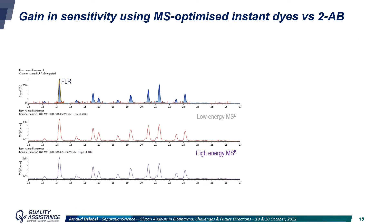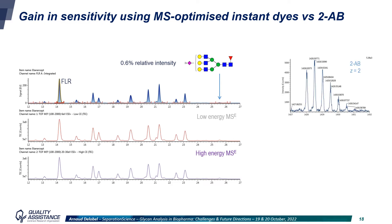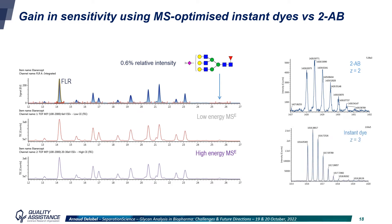The advantage of using instant dyes is the MS sensitivity. These dyes were designed to allow quick labelling but also high sensitivity in both fluorescence and MS. The arrow here shows a glycan with 0.6% of relative intensity. Here is the MS spectrum obtained on a state-of-the-art high-resolution MS system with a traditional labelling reagent — quite noisy — but with a recent dye the intensity is much higher, which allows for better MS identification of low-abundant glycans.